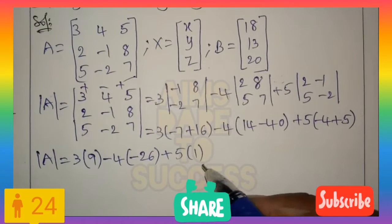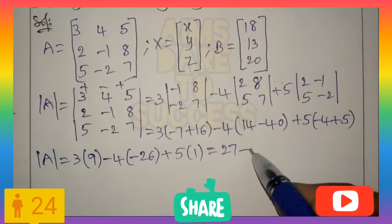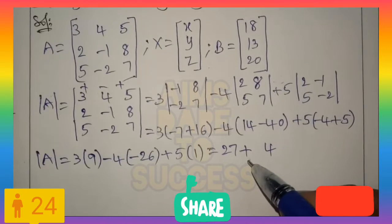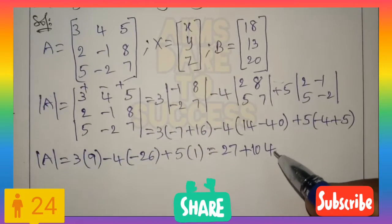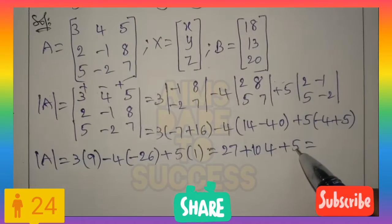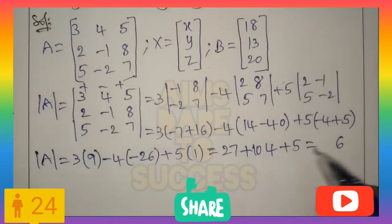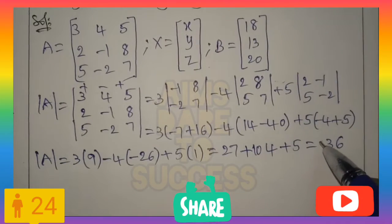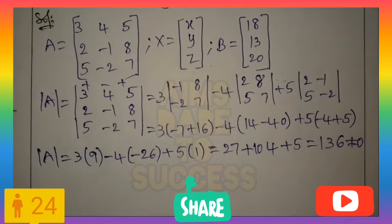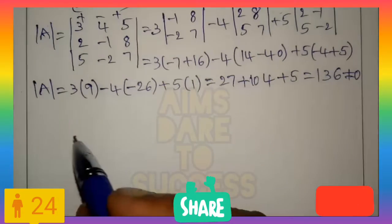So det(A) equals: 3×9 is 27, minus 4×(−26) — since 14 minus 40 is minus 26, so minus 4 into minus 26 is plus 104 — plus 5×1 is 5. That gives 27 + 104 + 5 = 136. So det(A) = 136, which is not equal to 0.